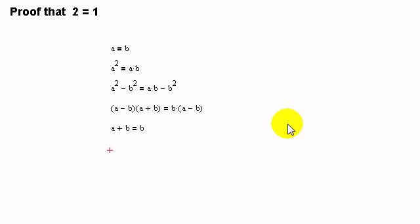Now from the beginning we saw that a equals b. So we can replace the a with b. b plus b equals b. Combining like terms we have 2b equals b. Divide both sides by b. And all you're left with is 2 equals 1.